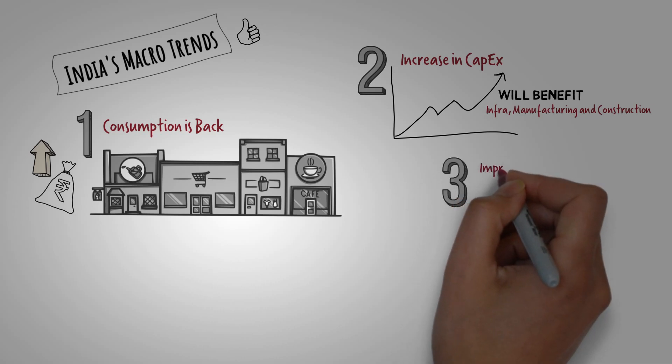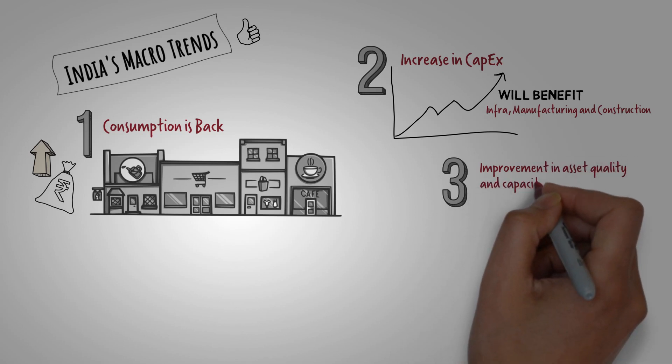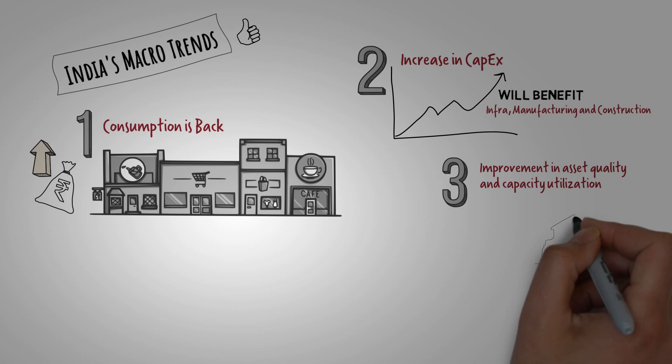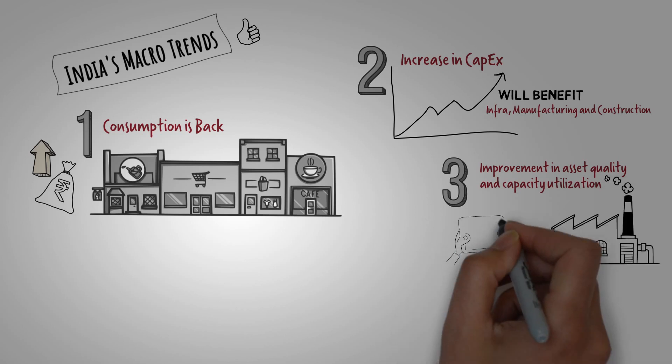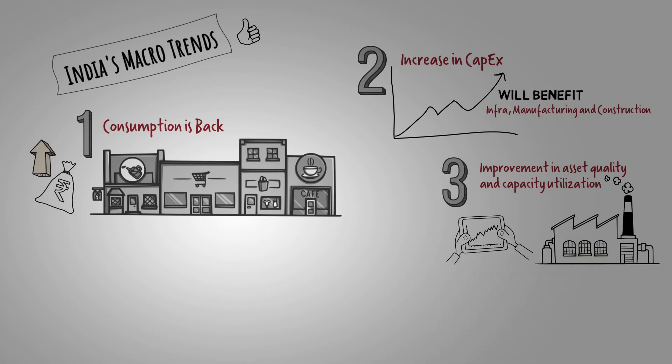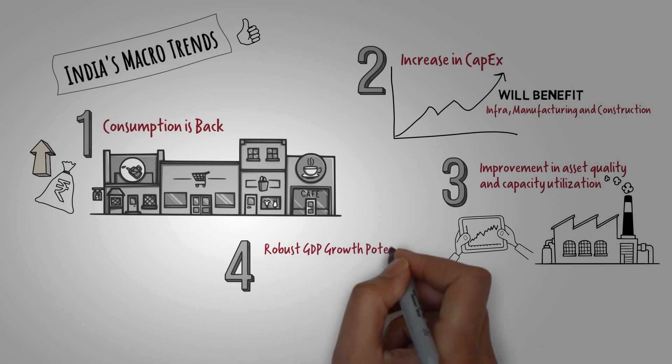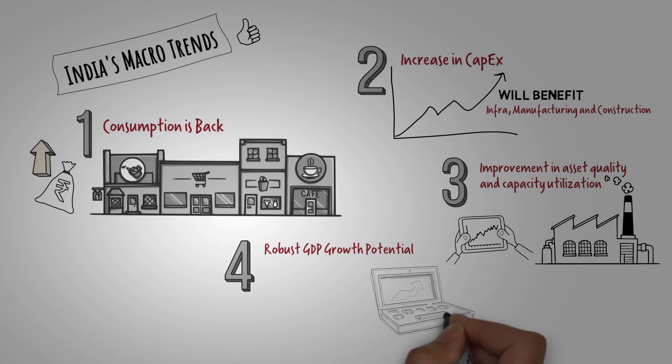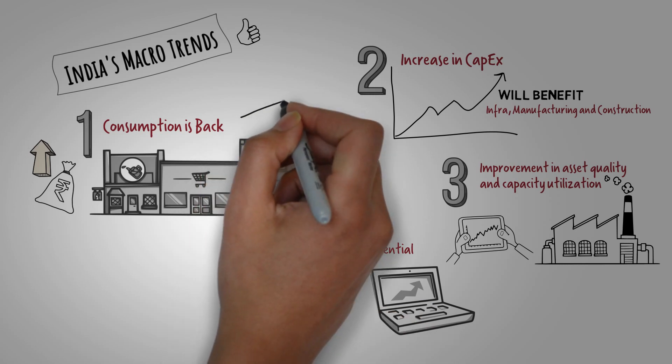Furthermore, there are indications of improvement in asset quality and capacity utilization across sectors. This signifies a healthier business environment and enhanced operational efficiency, which can contribute to overall growth. Additionally, a robust GDP growth outlook is expected for India. This projected growth has the potential to support earnings growth across different market caps, translating into favorable performance in the Indian stock markets.